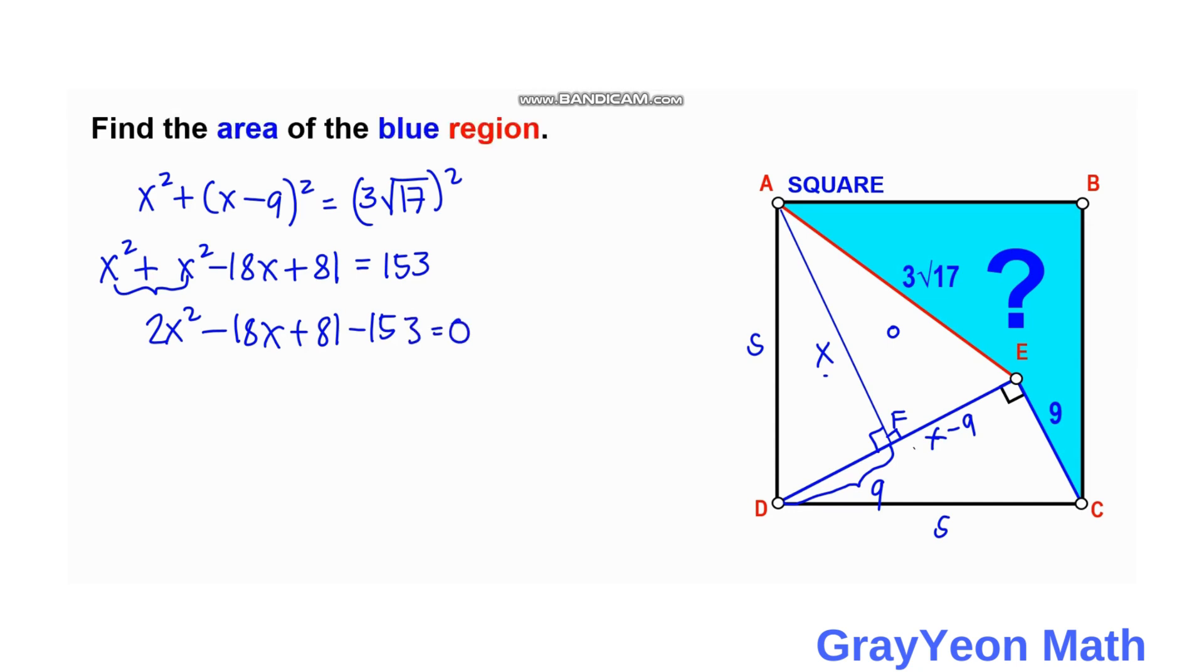So simplifying, we have 2X squared minus 18X minus 72 is equal to 0. And simply multiplying this by one half, we have X squared minus 9X minus 36 is equal to 0.